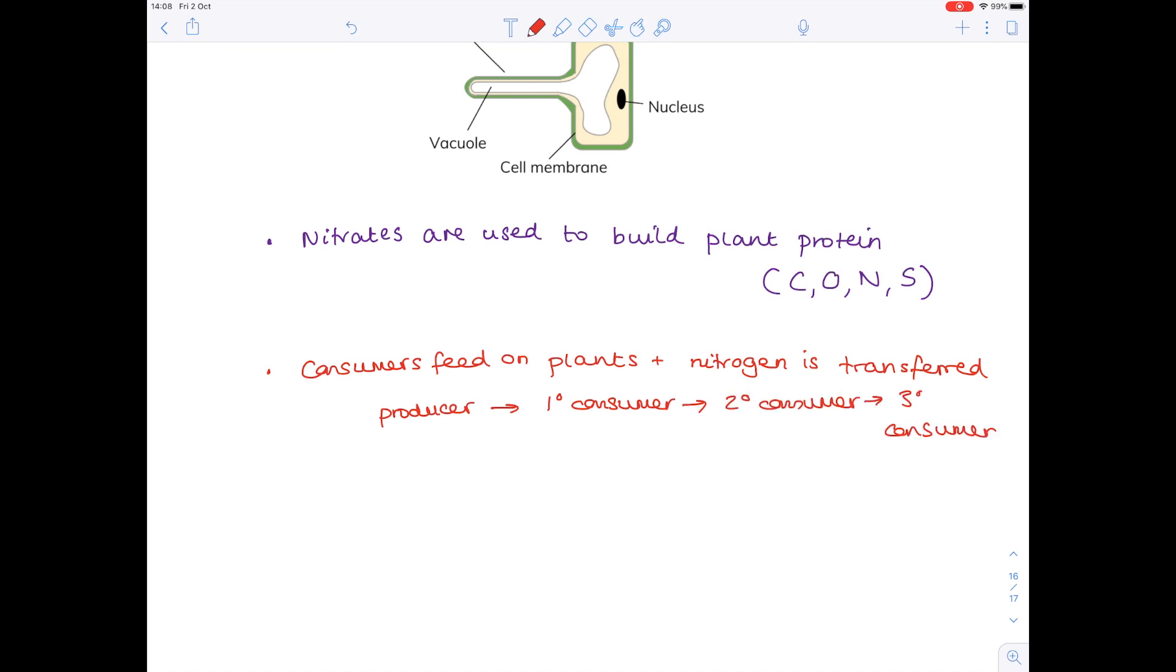Now because the nitrogen cycle is a cycle, we need to work out how this nitrogen will end up back into the atmosphere. So our first step for the return of nitrogen is the fact that all organisms die, and decomposers are responsible for taking those dead bodies and producing ammonia out of them. So decomposers carry out ammonification.